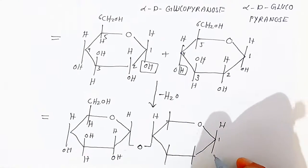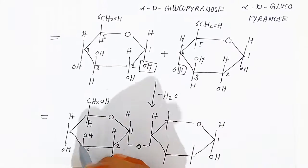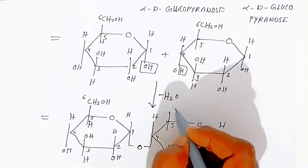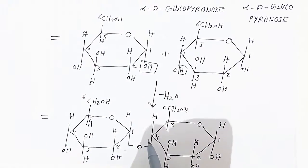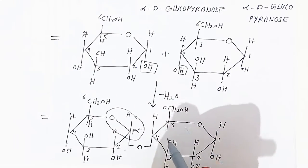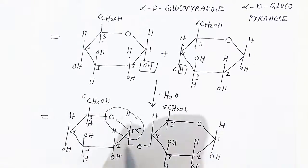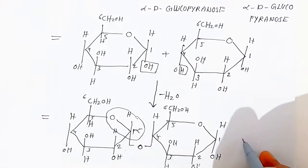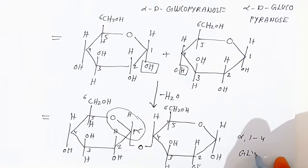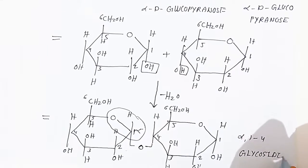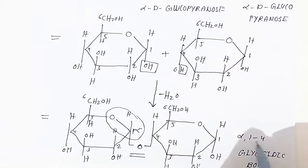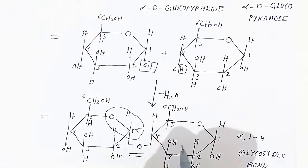Label carbon numbers 1 through 6 in each ring. The alpha carbon (carbon 1) of the first glucose is involved in bonding with carbon 4 of the second glucose. Therefore this glycosidic bond is called an alpha-1,4 glycosidic linkage.